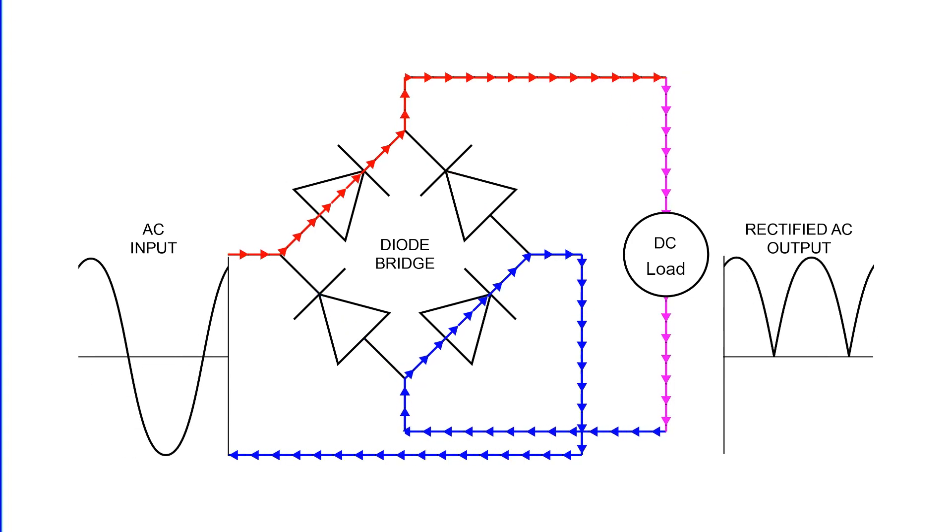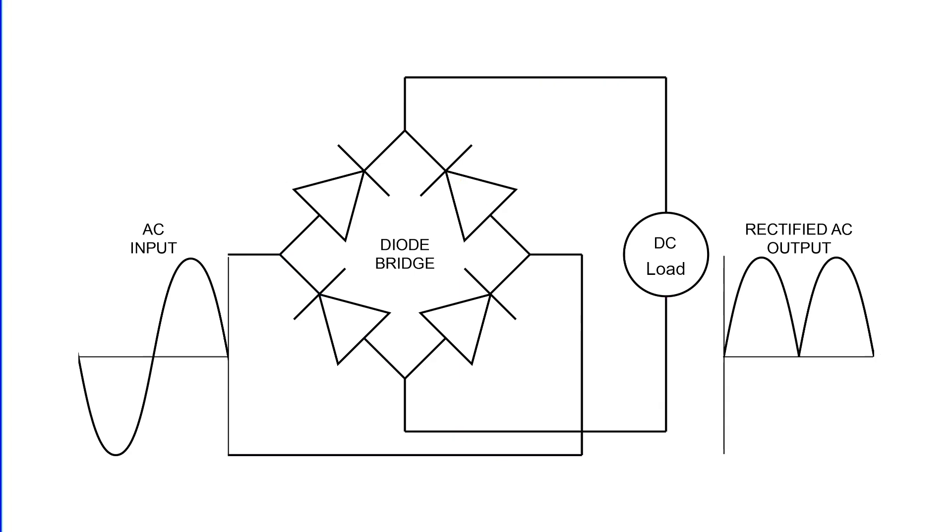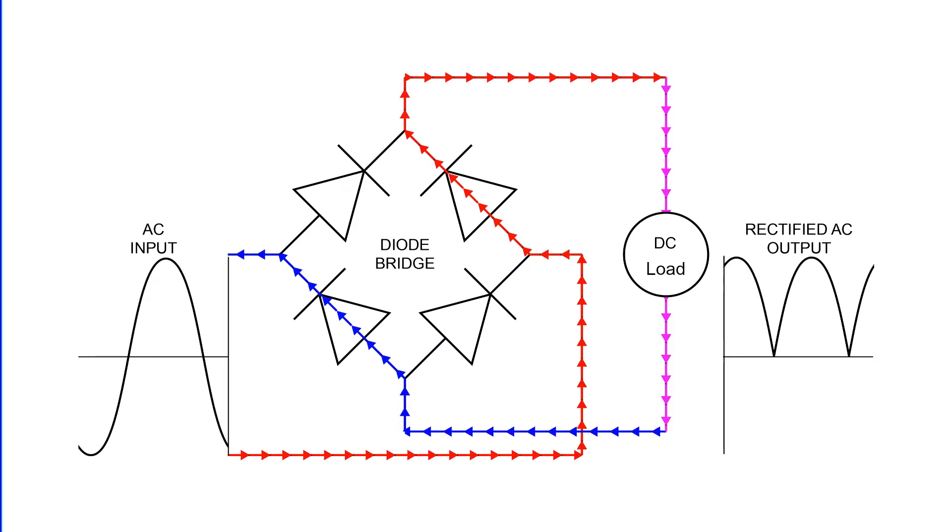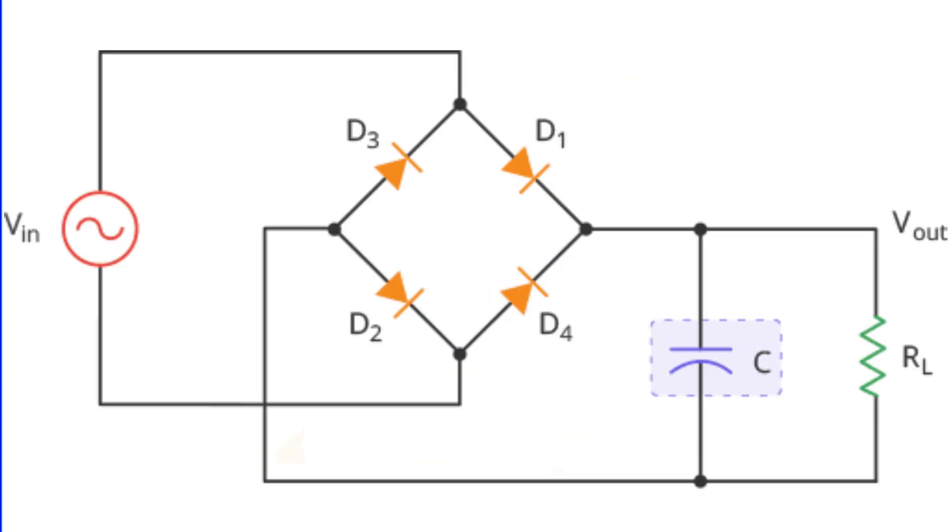However, the DC output from the bridge rectifier isn't perfectly smooth. It has tiny ripples, like a calm wave with small ups and downs. To achieve a purer DC output, we can team up the bridge rectifier with a capacitor connected across the load terminal.